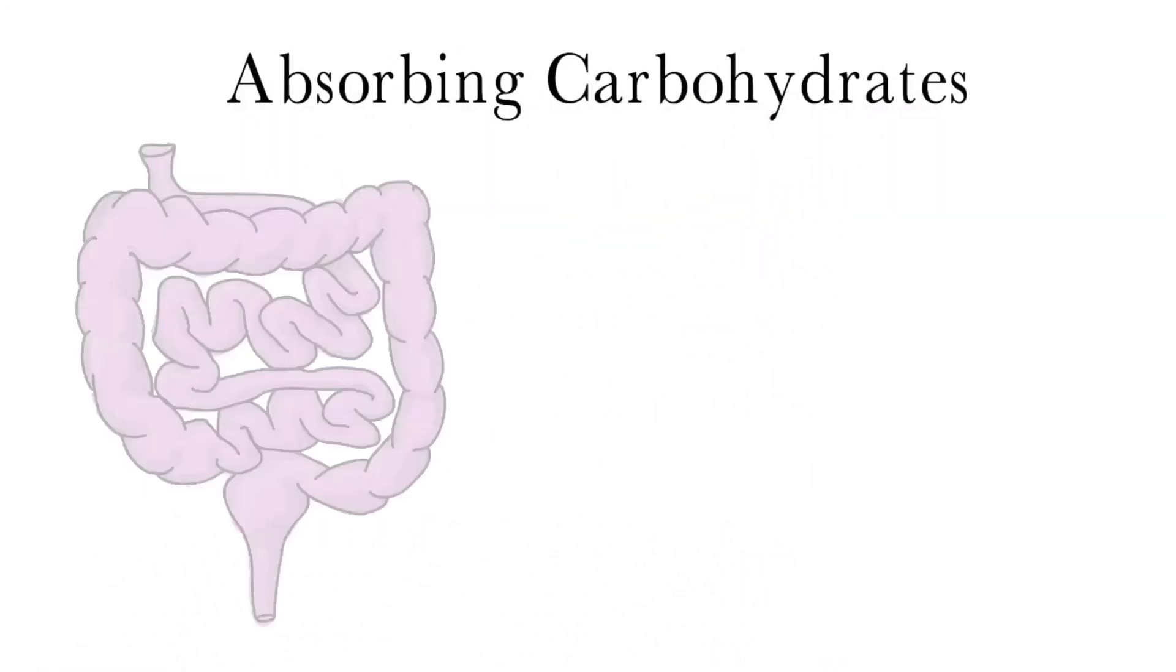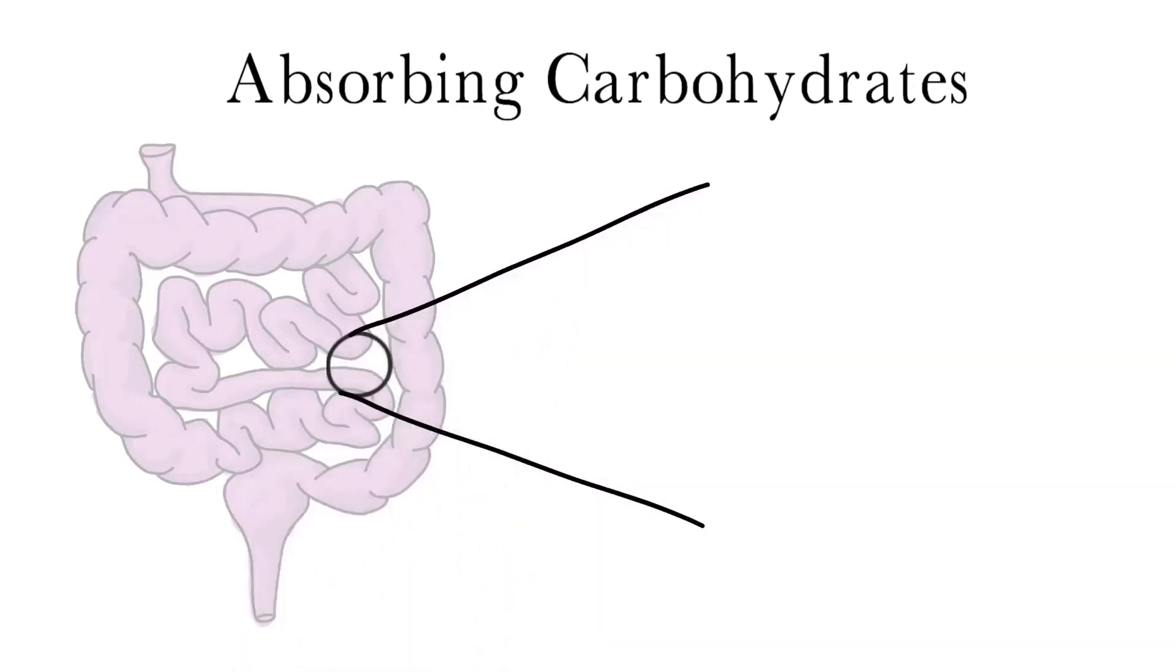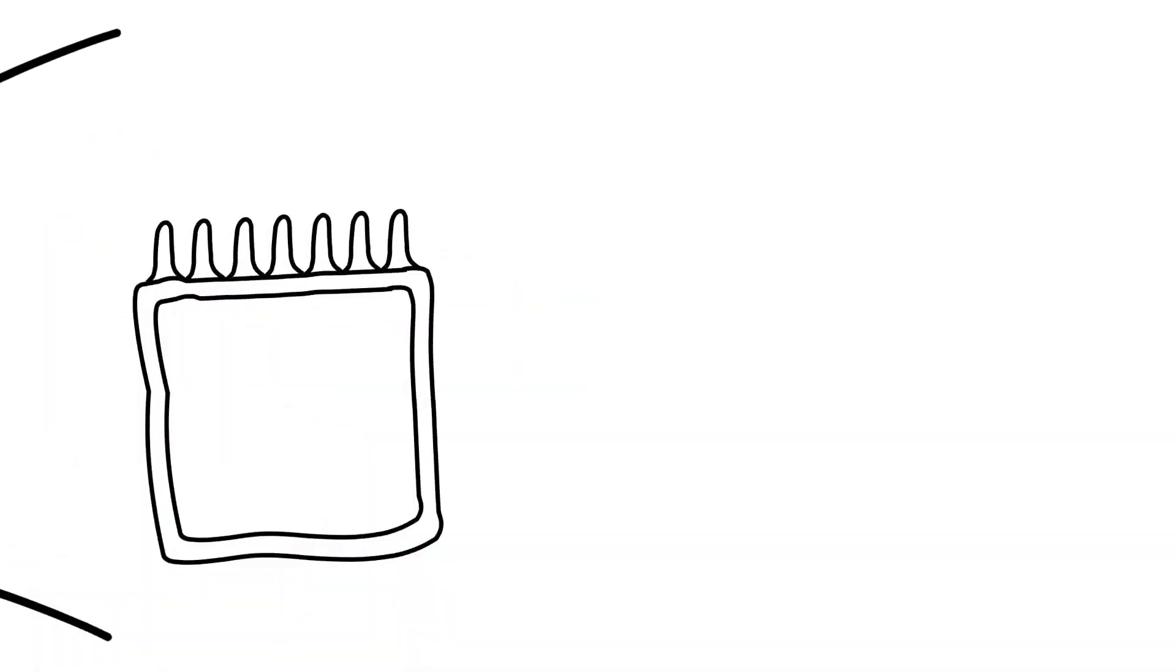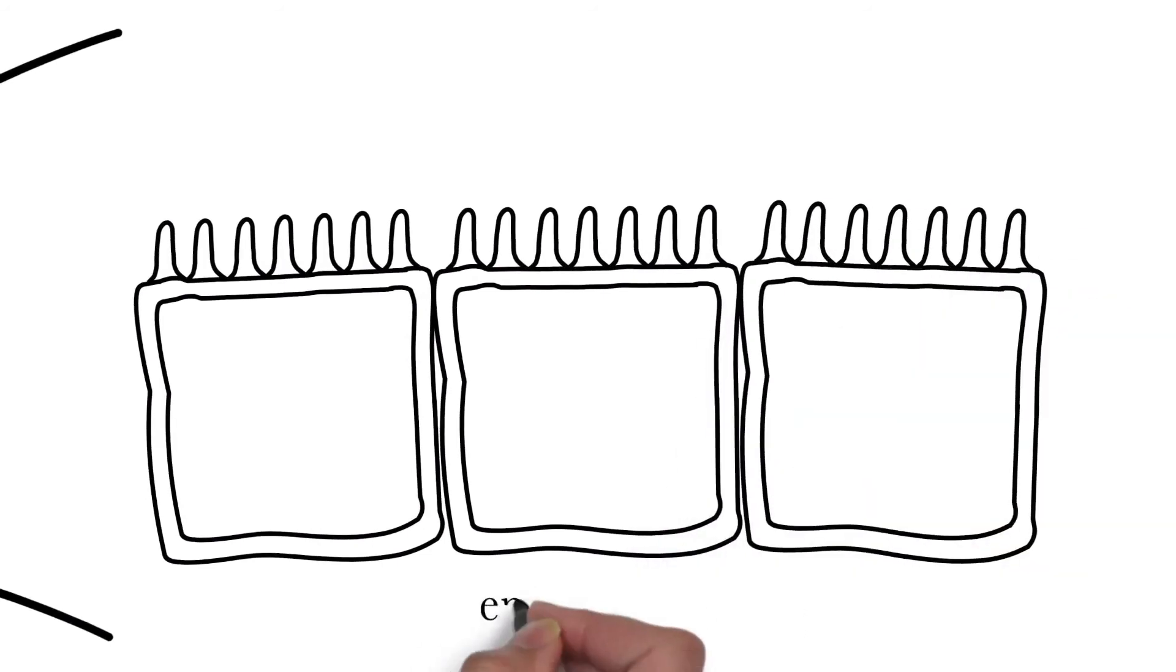After digestion, the monosaccharides glucose, galactose, and fructose are produced in the small intestine. From here, these monosaccharides are absorbed by the cells lining the small intestine, called enterocytes.